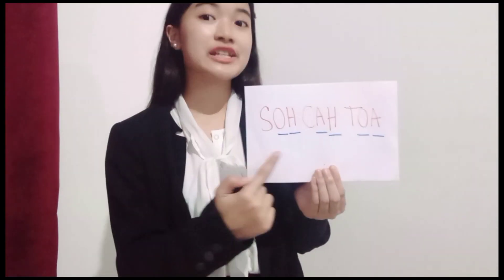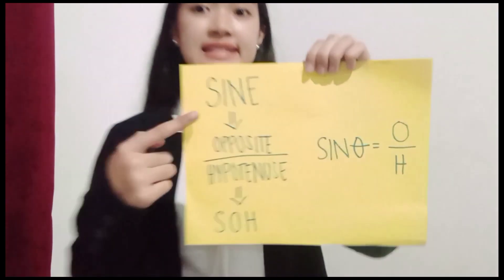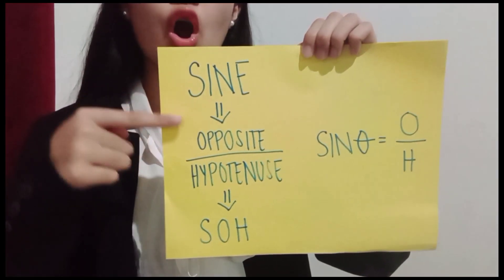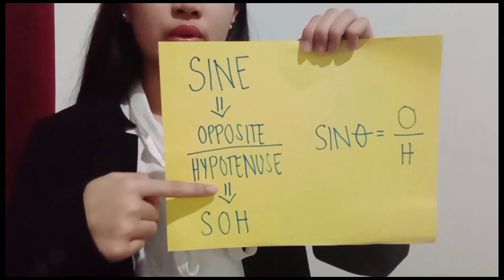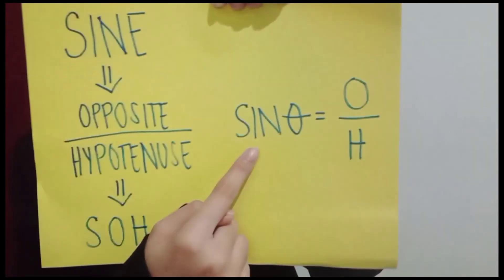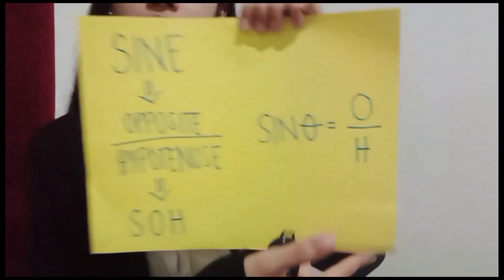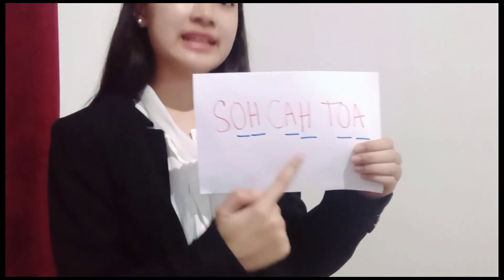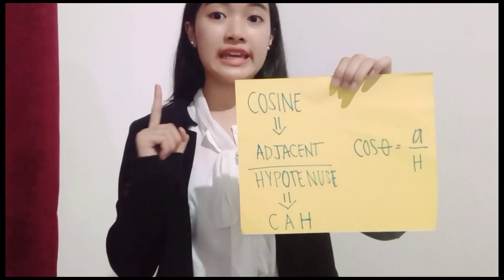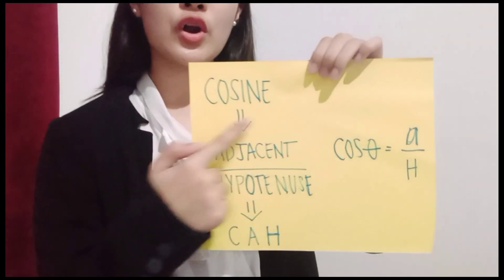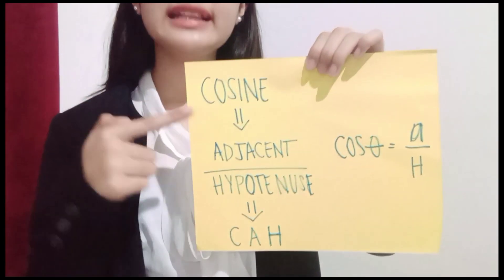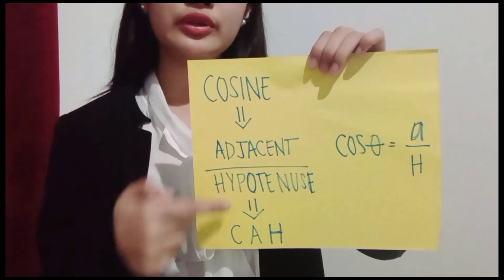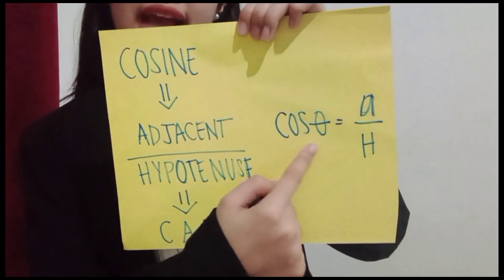First, the SOH: S stands for sine, which is equal to opposite over hypotenuse. Second, the KAH: C stands for cosine, which is equal to adjacent over hypotenuse.